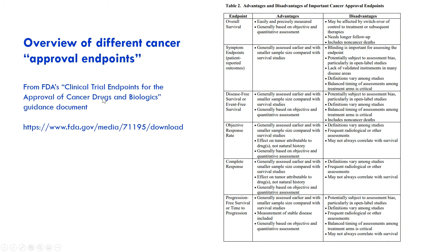There's this concept called approvable endpoints, which are endpoints that the FDA can rely on to say yes or no to approving a drug. You can measure anything from how long a patient lives if they get a drug versus a control, to things like how much of a certain metabolic marker is in a patient's blood. Approvable endpoints are usually those that directly measure or correlate strongly with clinical benefit.